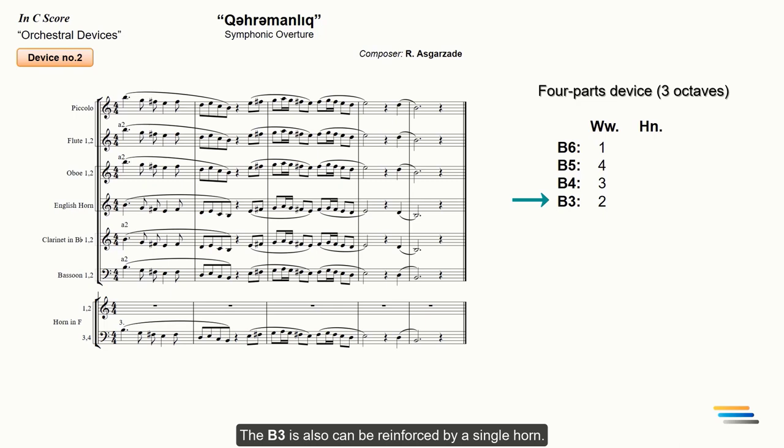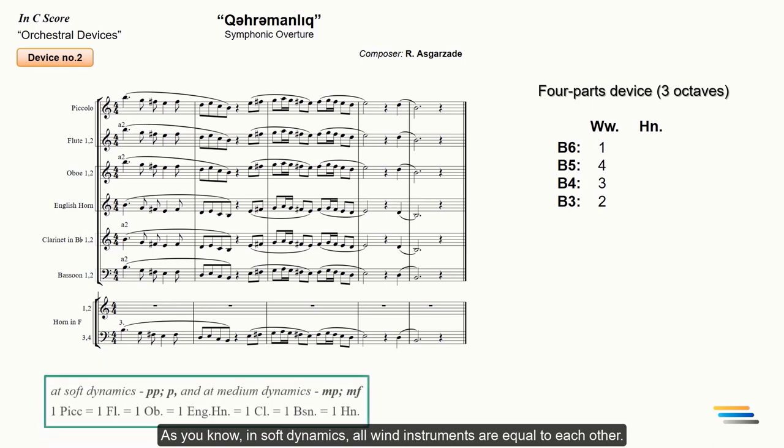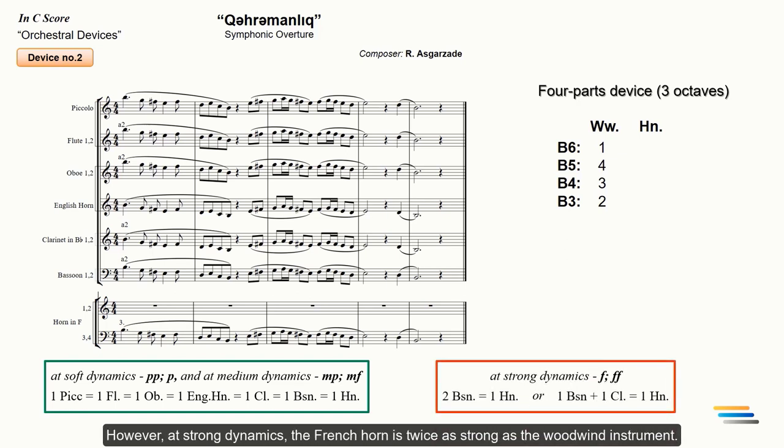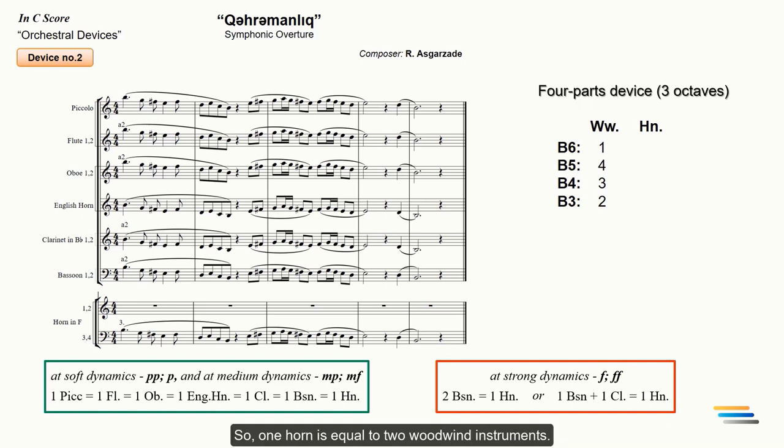Let's move on to the next device. The B3 is also can be reinforced by a single horn. As you know, in soft dynamics, all wind instruments are equal to each other. However, at strong dynamics, the French horn is twice as strong as the woodwind instrument. So, one horn is equal to two woodwind instruments. Considering this, it will be enough to double the bassoon part with a single horn. The horn should be counted with two as it is equal to two woodwinds. Now, the power of the B3 register will be four.